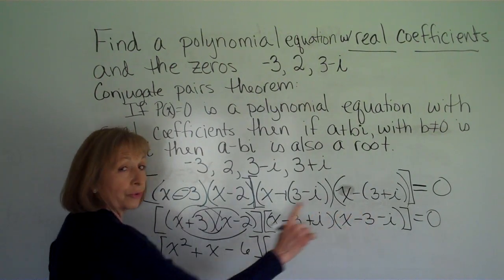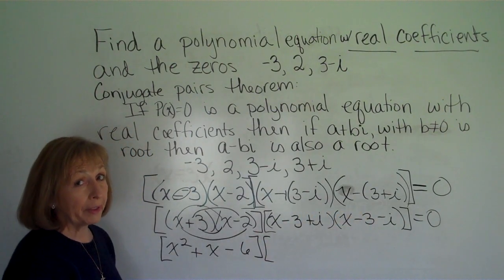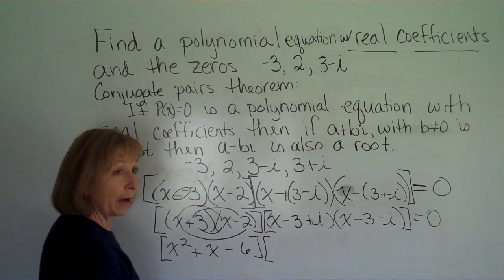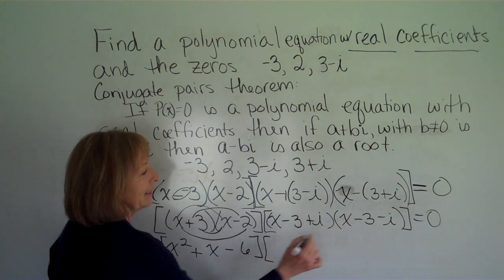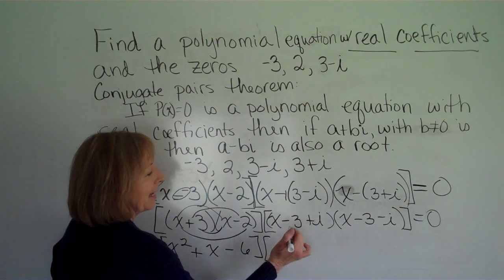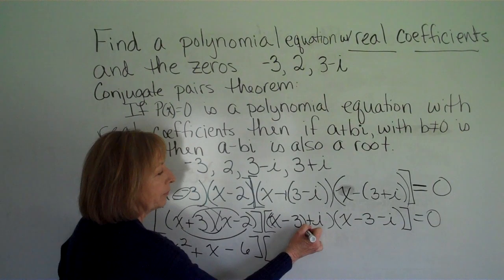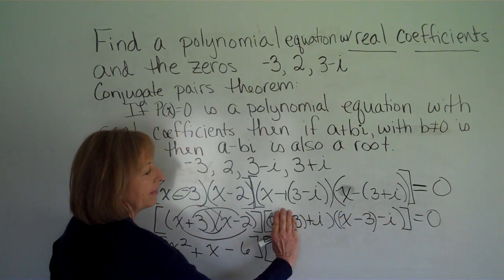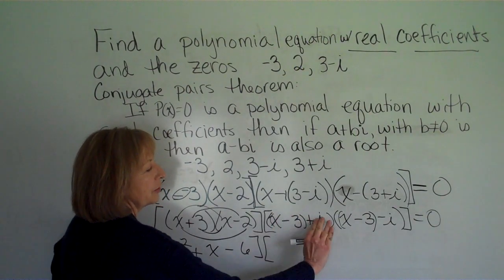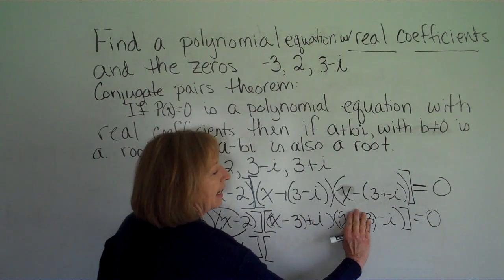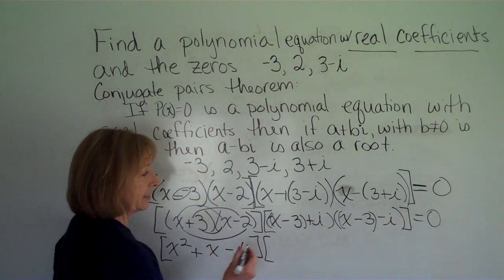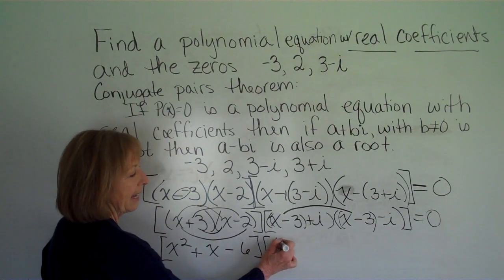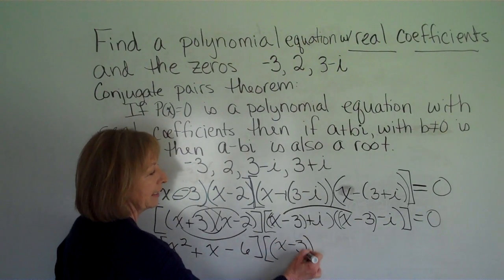And now a trick with these last couple, it can get pretty messy. But if you use your associative property and group these as the x minus 3 grouping and then plus the i and the x minus 3 minus the i, and then think about the two expressions in your first set of parentheses and these two expressions in your second set of parentheses. So x minus 3 times x minus 3 is x minus 3 quantity squared.